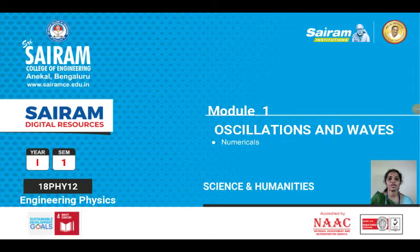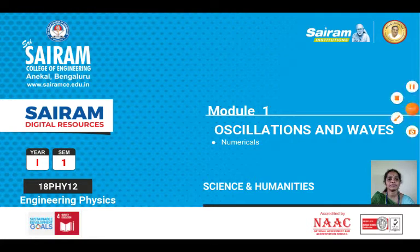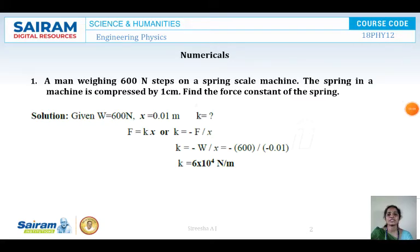In this session we are going to see some numericals in module 1 on oscillations and waves. The first numerical: a man weighing 600 Newtons steps on a spring scale machine. The spring in the machine is compressed by 1 centimeter. Find the force constant of the spring.